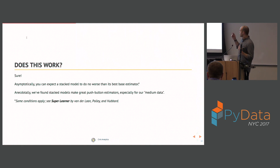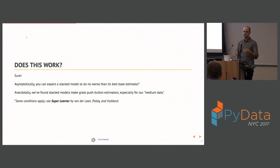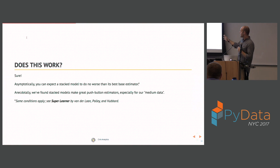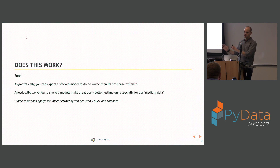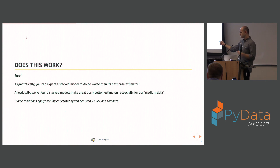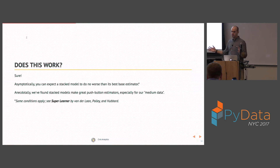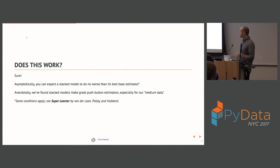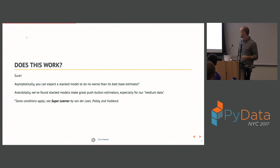So does this work? Yes. One key result in the SuperLearner paper from van der Laan, Polley, and Hubbard is that you can asymptotically expect your stack model to do no worse than its best base estimator — it should do as good as or better. Some conditions apply; read the paper. Anecdotally, we found this to be true at Civis. We work a lot with what we call medium data — thousands of rows, hundreds of columns. We run a handful of classifiers, plug them into a stack model, and use it as a push-button estimator. We get really good AUCs out of it.